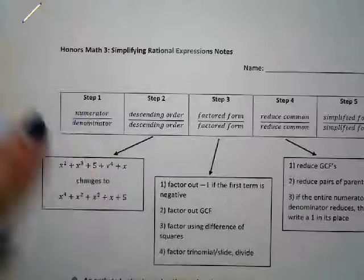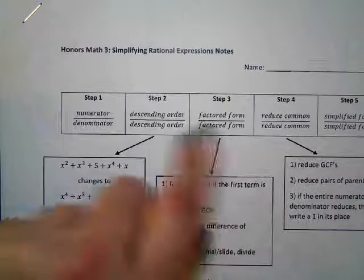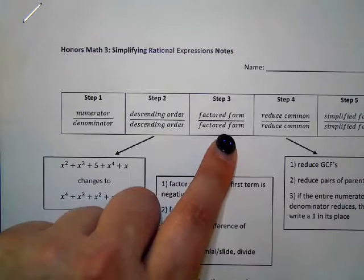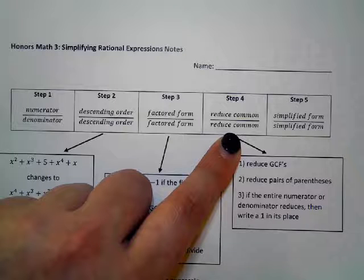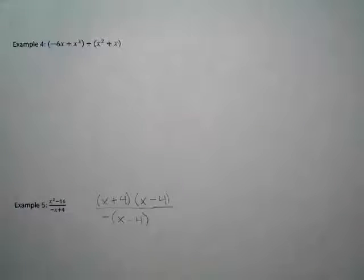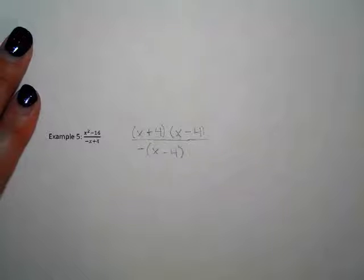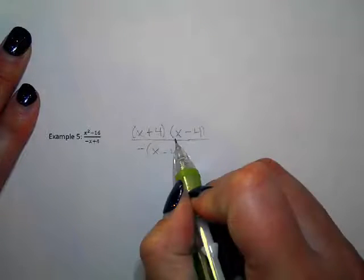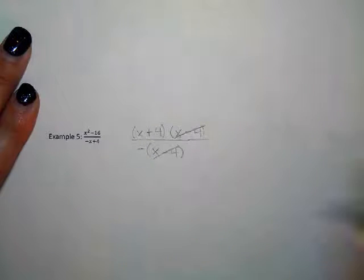Step one: numerator over denominator. Descending order. Factored form. Now we're going to reduce the factors that are in common. What factors can we reduce? X minus four and X minus four are the same, so X minus four divided by X minus four reduces to make a one.